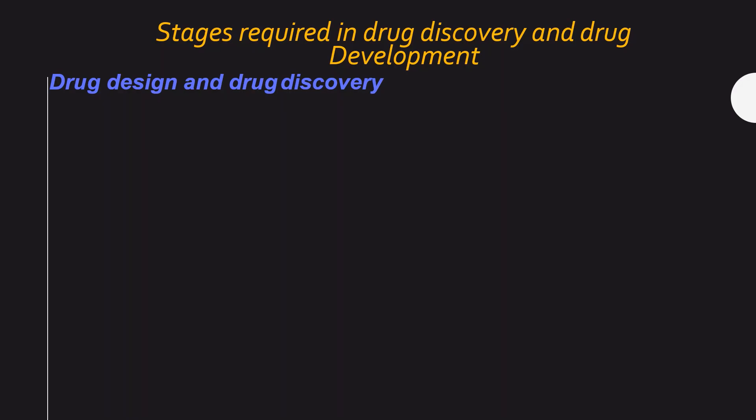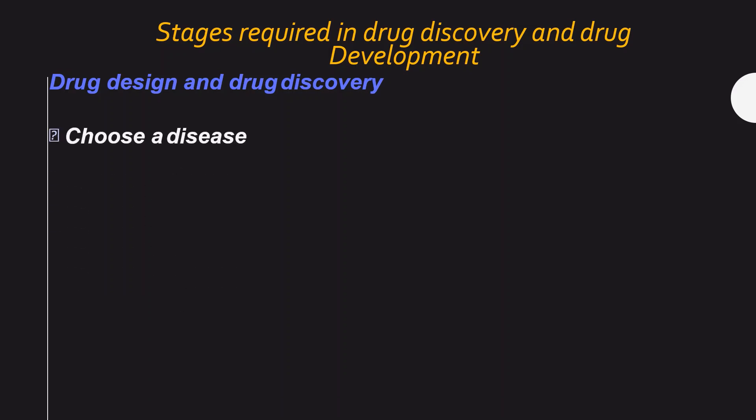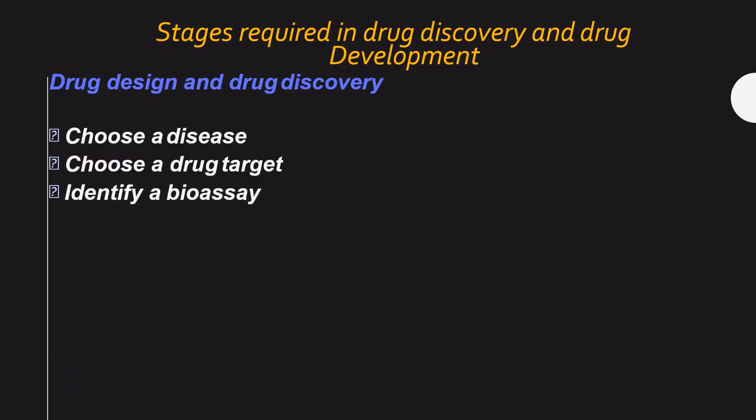Now we discuss the stages required in drug discovery and drug development. The first stage is to choose the disease — maybe a particular disease such as cancer or a disease of a particular organ. The second stage is identifying the drug target, which is the receptor — a receptor protein or enzyme. The third stage is to identify the bioassay: the technique to understand how the drug will interact.